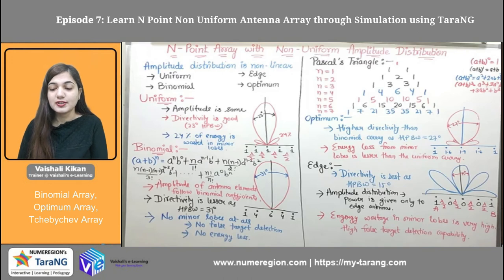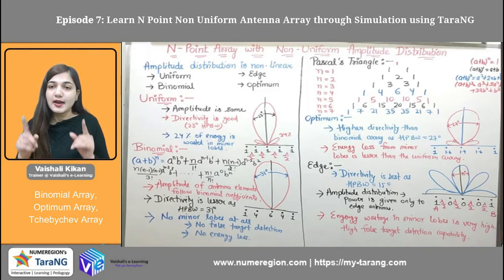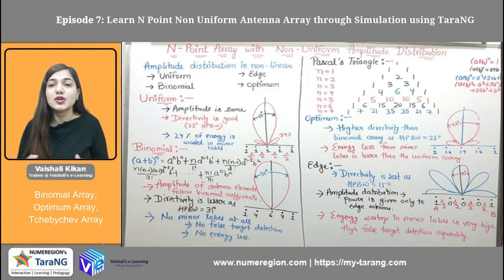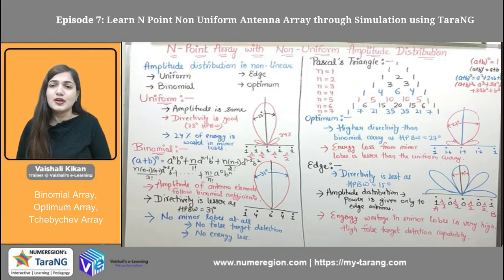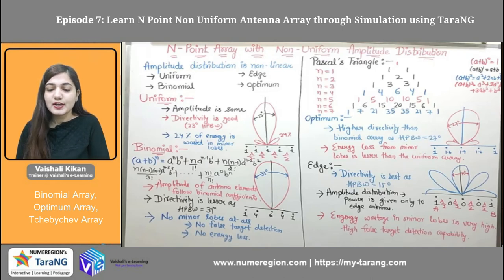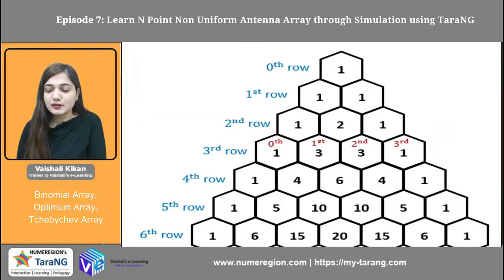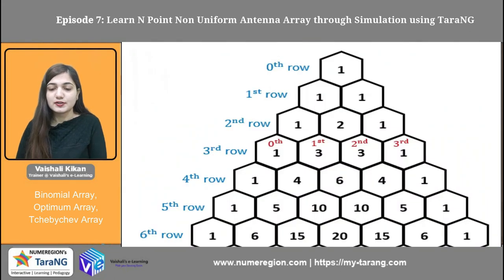Coming to the edge distribution — edge distribution is 1, 0, 0, 0, 1. This means only two points in the antenna array are working; the rest are non-working. So it can be easily justified from the two-point antenna array. Here also we have lesser directivity and more minor lobes.